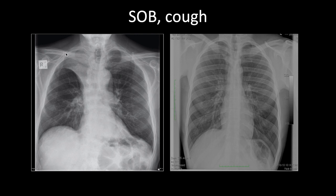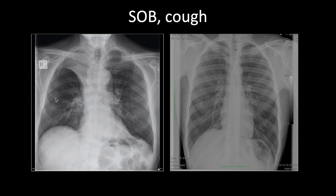In another case, there's an opacity in the upper zone of the right lung. The right hemidiaphragm is pulled up, the trachea is shifted slightly to the right, and the entire right hemithorax is noticeably smaller than the left. This is right upper lobe collapse. When the right upper lobe collapses, it collapses in a paramedian fashion — pulling toward and up toward the midline, as seen here.